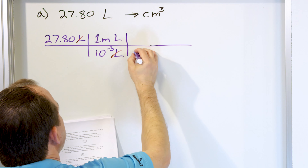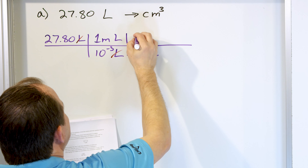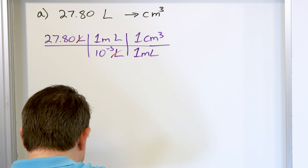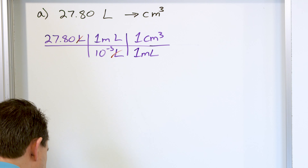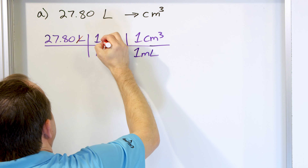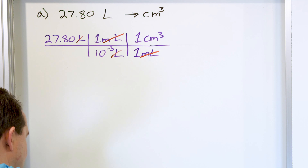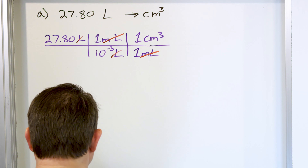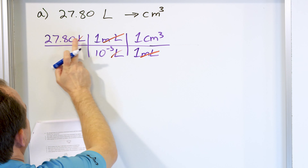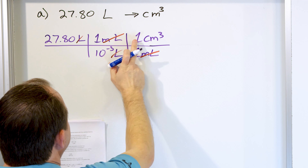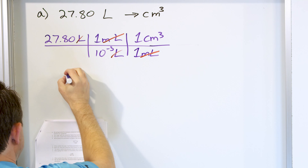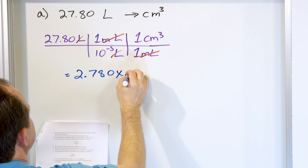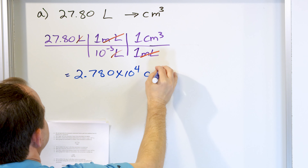We also remember that one milliliter is exactly the same thing as one cubic centimeter. So then we've completed the writing down of what to do, because now all we have to do is calculate. We're going to take 27.80 times one divided by this times one divided by one, and all that you get is 2.780 times 10 to the four cubic centimeters.